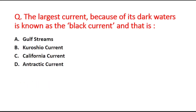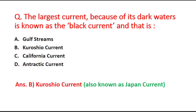Next question: The largest current known as the black current because of its dark waters — option A is Gulf Stream, B is Kuroshio current, C is California current, and D is Antarctic current. The right answer is option B, Kuroshio current. This is also known as the Japan current and is the largest such current.